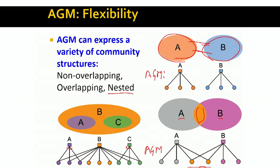The bottom line is that this model for generating networks is very flexible. If somebody gives us the structure of the bipartite affiliation graph, we are able to generate the network. What we will do next is turn the problem around — given a network, we want to find the model. This will be the topic of our next lecture.